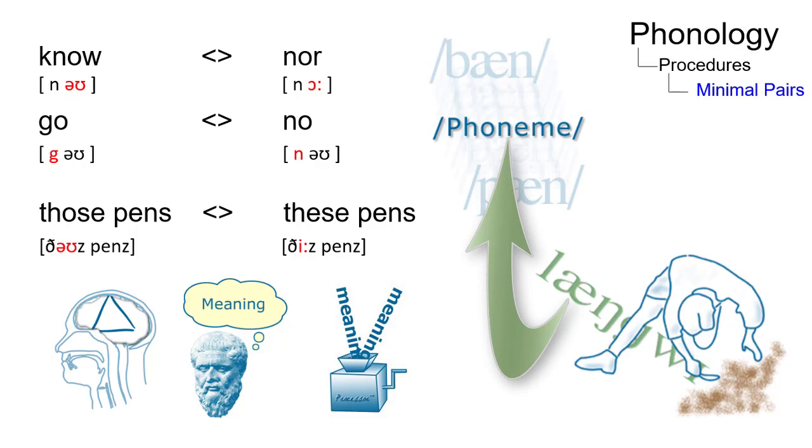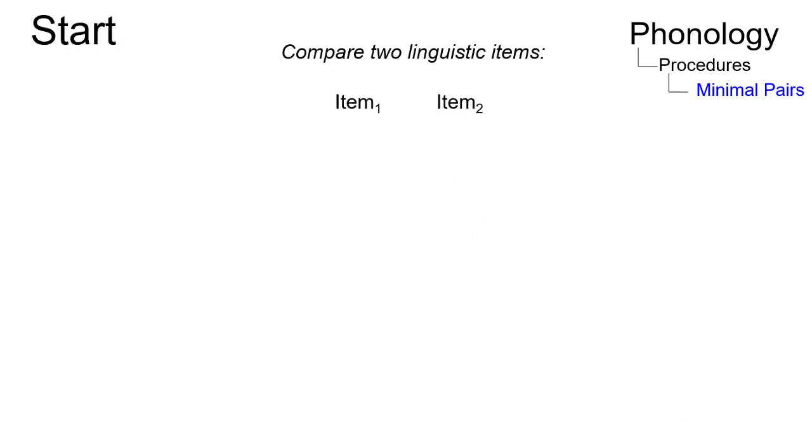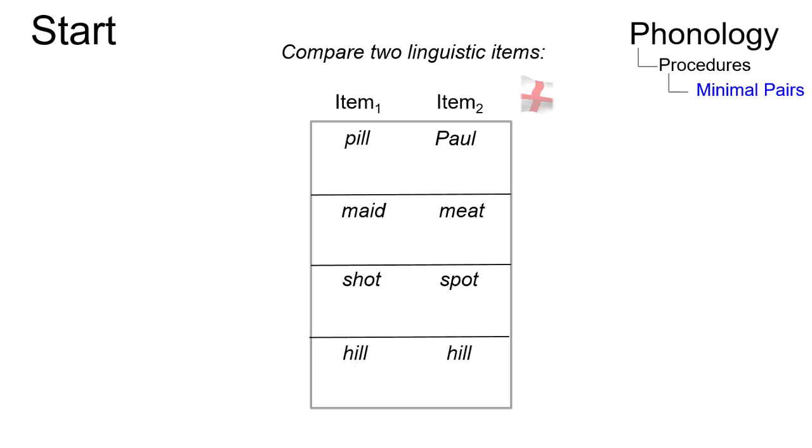It works as follows. Compare two items, let's say, two words. Here are four such present-day English pairs in their orthographical form.